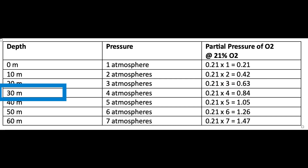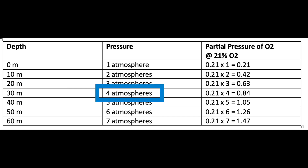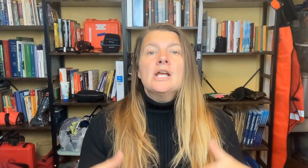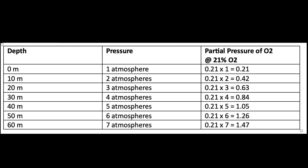If you go down to 30 meters, you are now subjected to four atmospheres of pressure. That means your 0.21 is now quadrupled to 0.84 partial pressure of oxygen. This goes on and on as you go deeper and deeper. For purposes of recreational diving, 40 meters is usually your maximum, and there your PPO2 for regular air is 1.05.